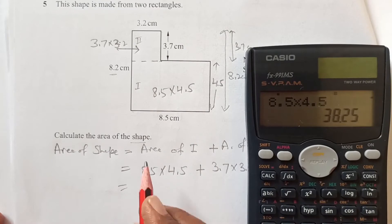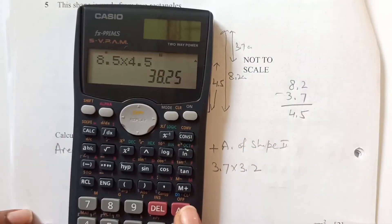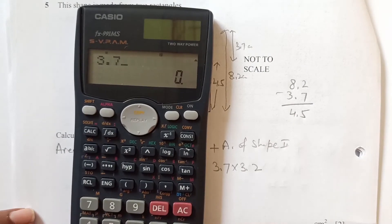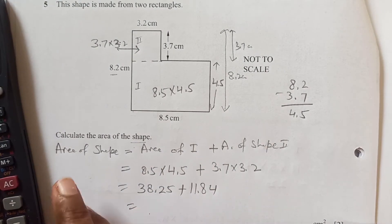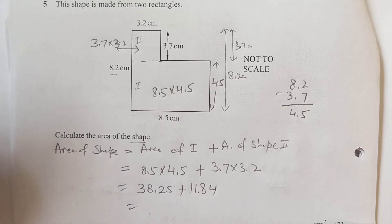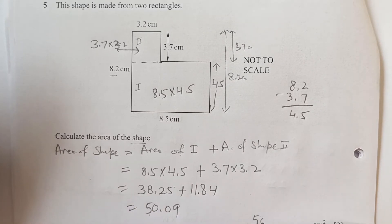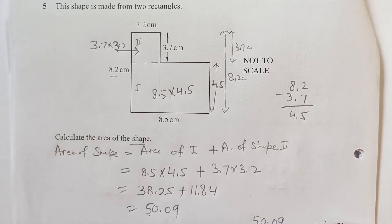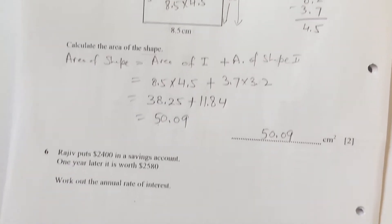8.5 × 4.5 = 38.25, plus 3.7 × 3.2 = 11.84. Adding these together gives 50.09. So 50.09 cm² is the area of the combined shape.